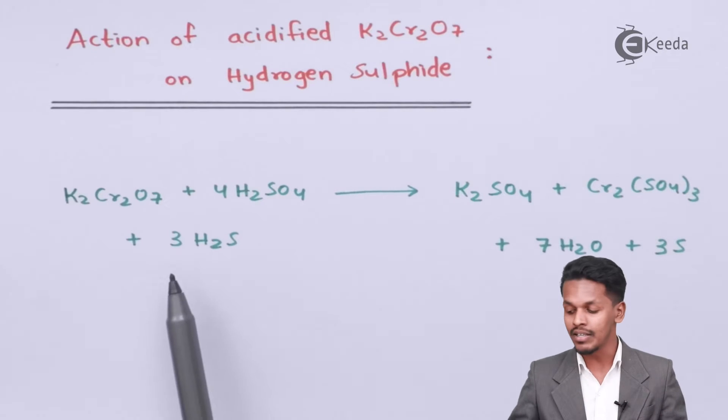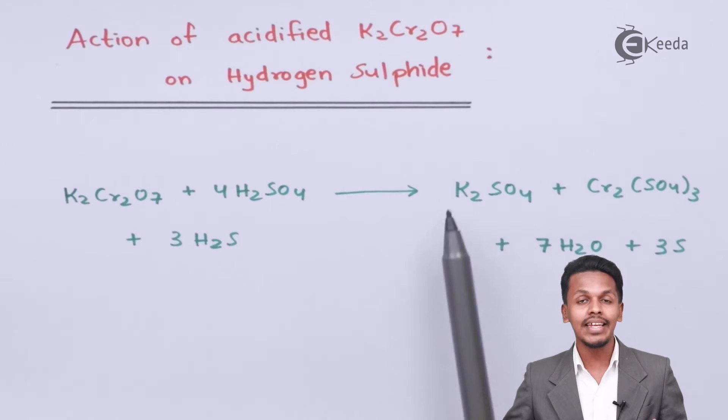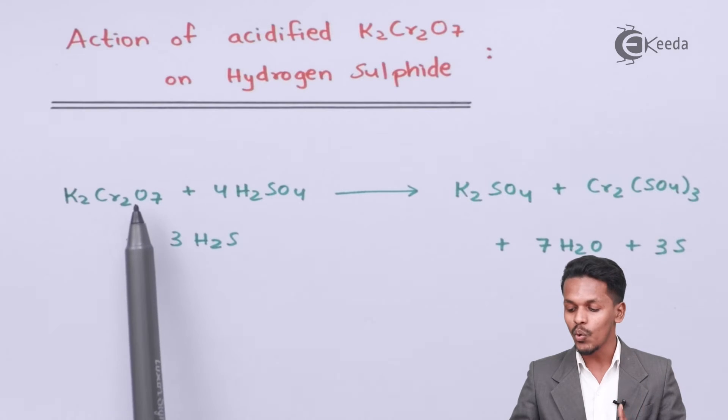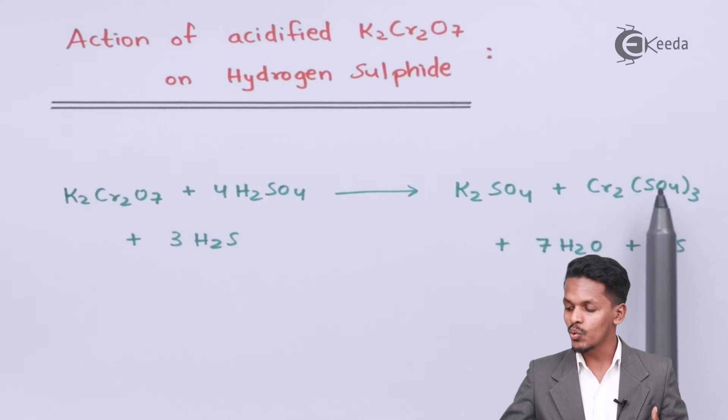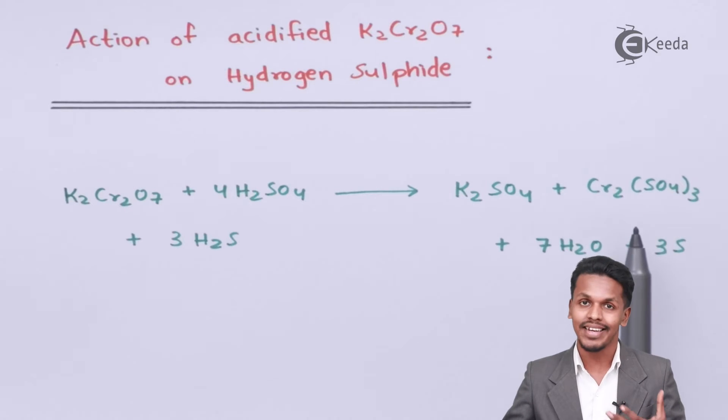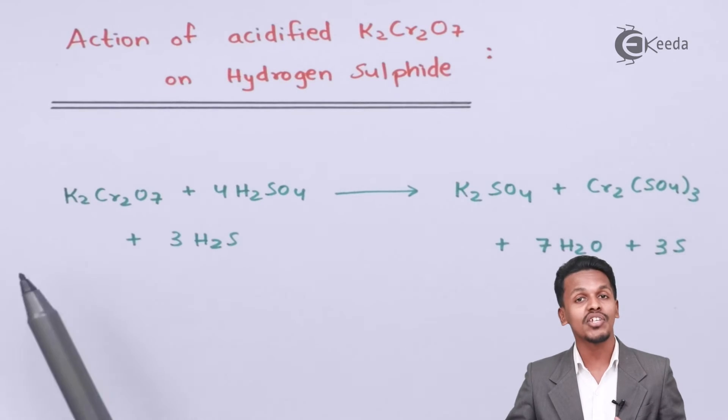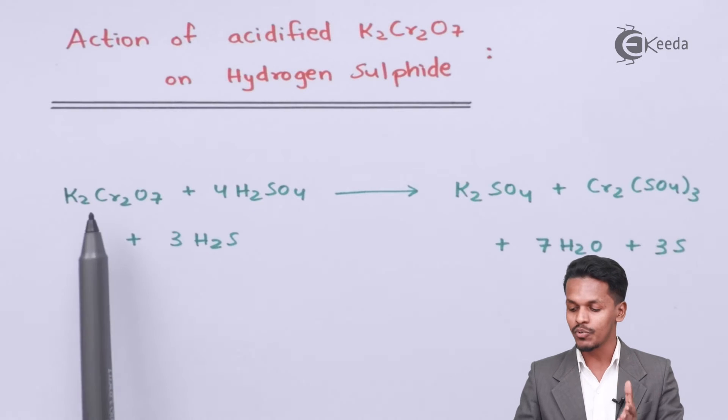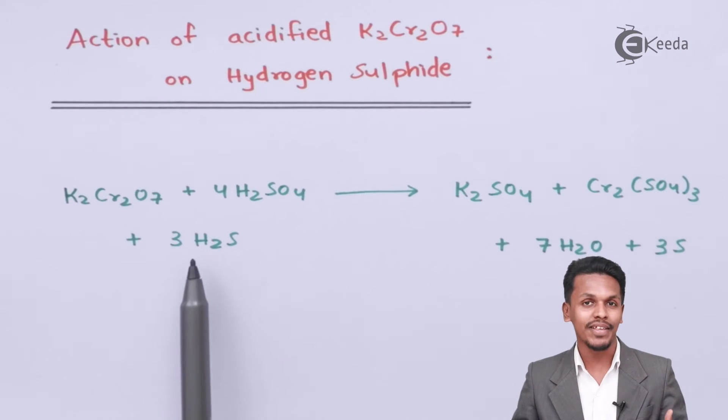But after the reaction occurs, the solution becomes green in color. This is because K2Cr2O7 is converted into Cr2(SO4)3, which is green in color. Therefore, this is the color change we can observe when K2Cr2O7 is treated with H2S.